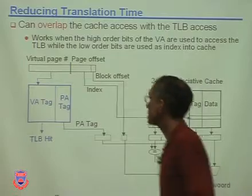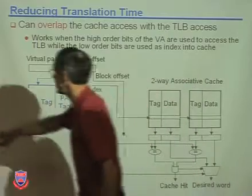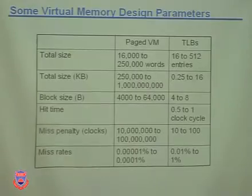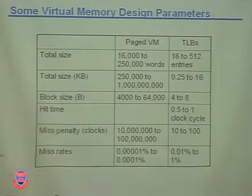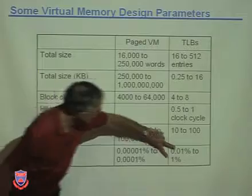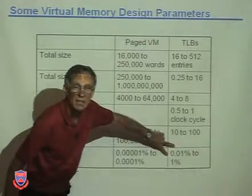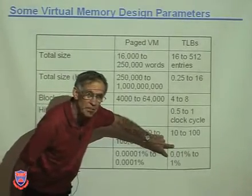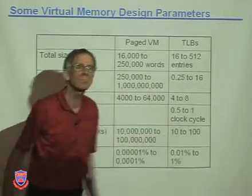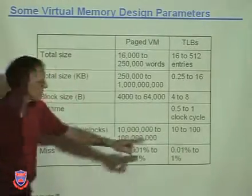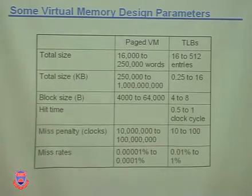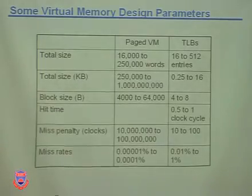The answer to what kind of hit rates we can expect from a well-designed TLB: the miss rates are in a certain range, so the hit rates are 99% to 99.99%. The answer is right there.